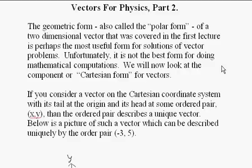We will now look at the component or Cartesian form for vectors. If you consider a vector on the Cartesian coordinate system with its tail at the origin and its head at some ordered pair (x,y), then the ordered pair describes a unique vector.